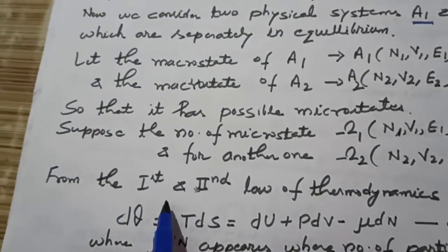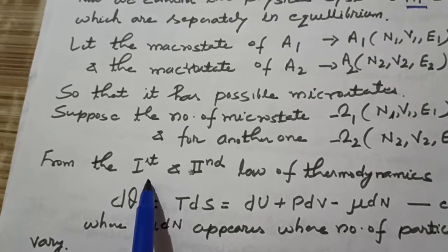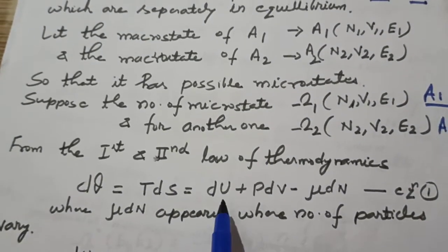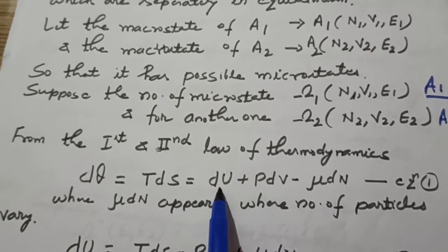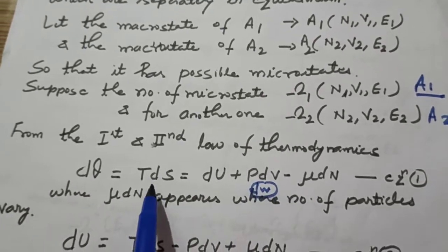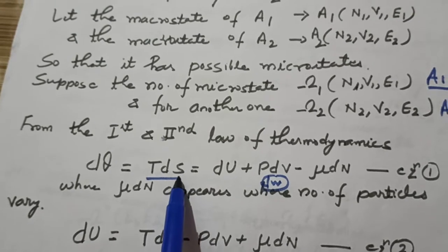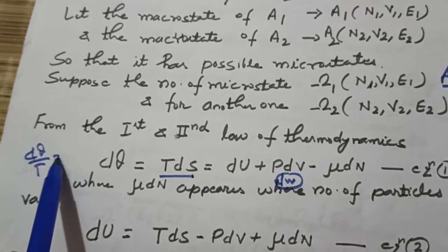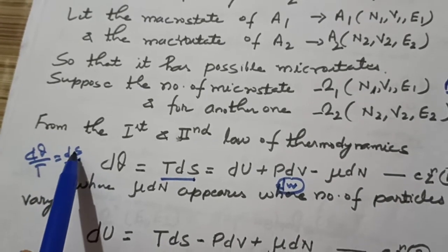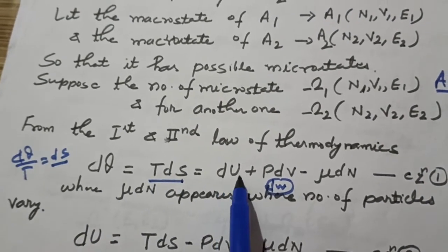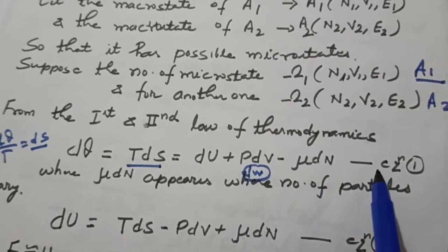You have already studied the first and second law of thermodynamics. The first law is the conservation of energy: dQ equals dU plus PdV, i.e., dU plus dW. When we introduce entropy, dQ upon T equals dS, the change in entropy. So we write dQ equals TdS, which equals dU plus PdV minus μdN. This is equation 1, where μdN appears when the number of particles varies.